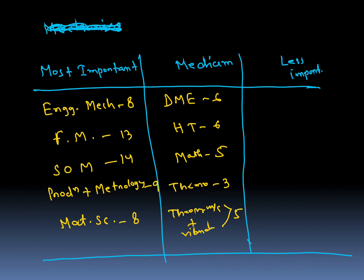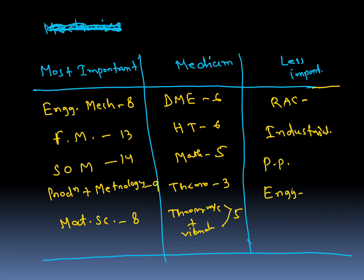Less important subjects are RSC (Refrigeration and Air Conditioning) — around 1–3 questions; important topics here are the psychometric chart and heat pump and refrigerator, including COP calculation. Industrial: 1–3 questions. Power plant: 0–2 questions. Engineering Drawing: 1–3 questions.